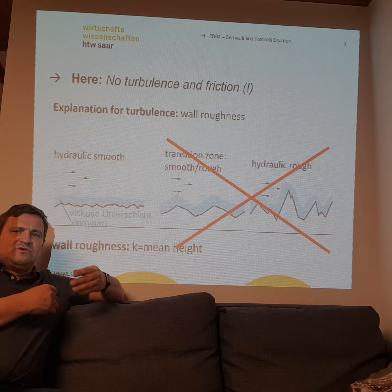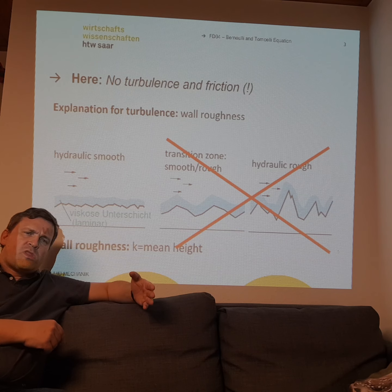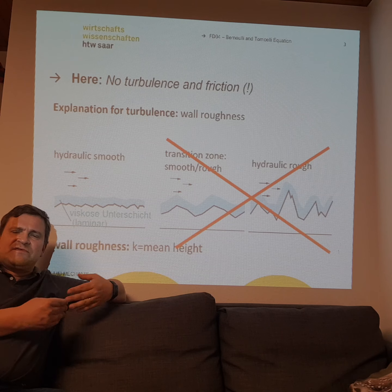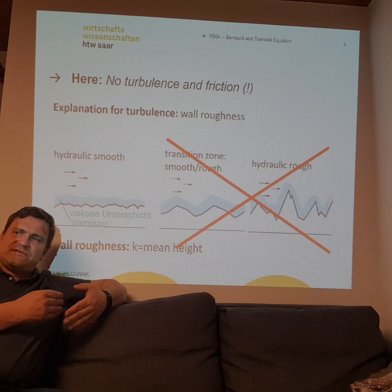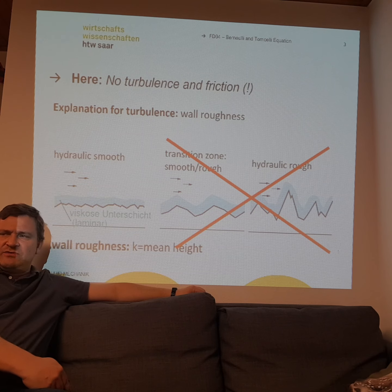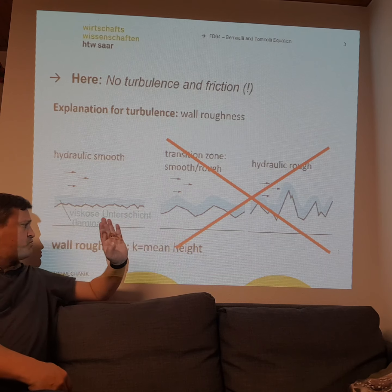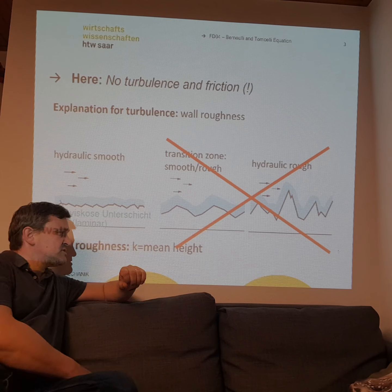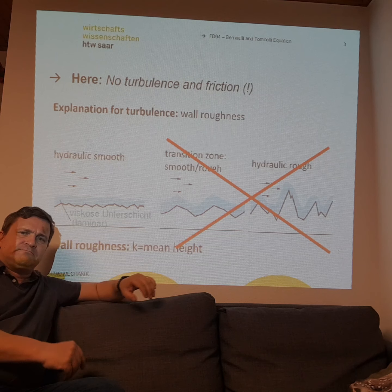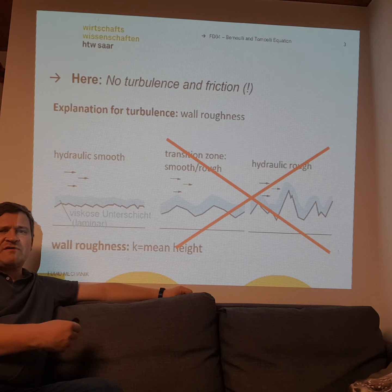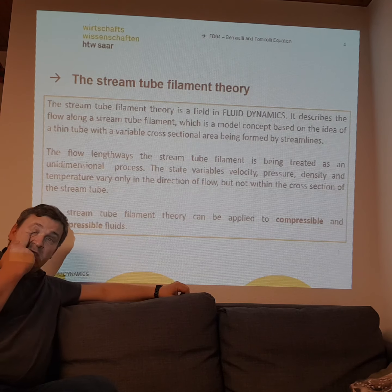Maybe a little bit about roughness, but not so much. Roughness can influence our fluid flow mainly when we have turbulences. With laminar flow, roughness will not have a big influence, but with turbulent flows and rough surfaces we get a big roughness influence. You can measure the wall roughness with a so-called k-factor, which is the mean height of the rough particles on the surface.